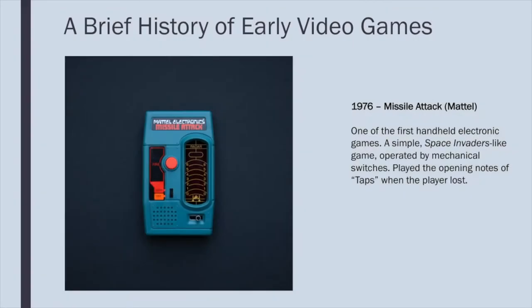Another interesting footnote in the history of video game sound is Missile Attack by Mattel — the first handheld electronic game. It has a simple little screen on the right that is basically a series of lights, and you move a switch to move your light from right to left. The computer shoots little balls of light at you, and you have to shoot back to stop them. When you lose, you get just the first couple of notes of Taps — that military tune, da-da-da, da-da-da — as a little indicator that you died and have to start over.